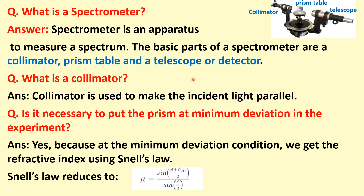What is a spectrometer? A spectrometer is a device to measure a spectrum. The basic parts of the spectrometer are the collimator, prism table, and detector. The collimator is used to make the incident light parallel.